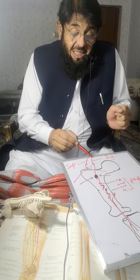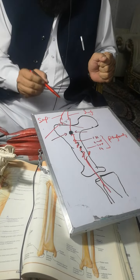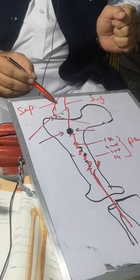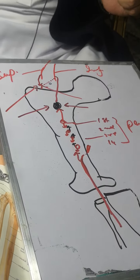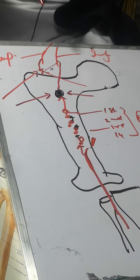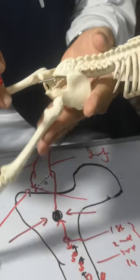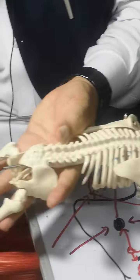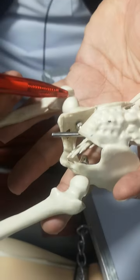This is the inferior gluteal artery and this is the superior gluteal artery. This is the greater trochanter and over here is the trochanteric fossa. On the posterior side, you can see this is the trochanteric fossa.